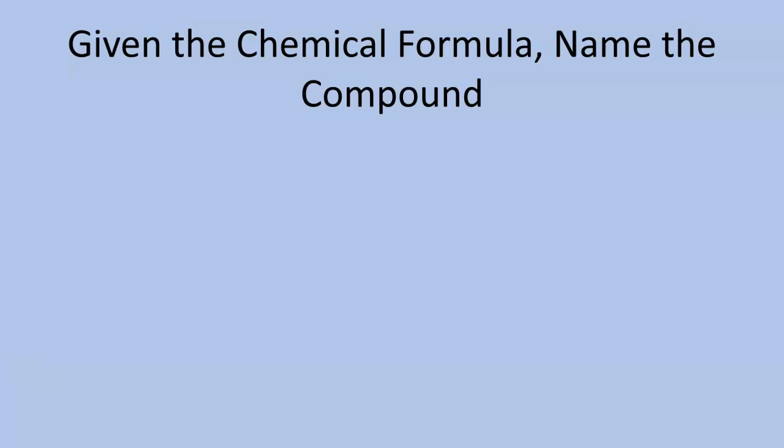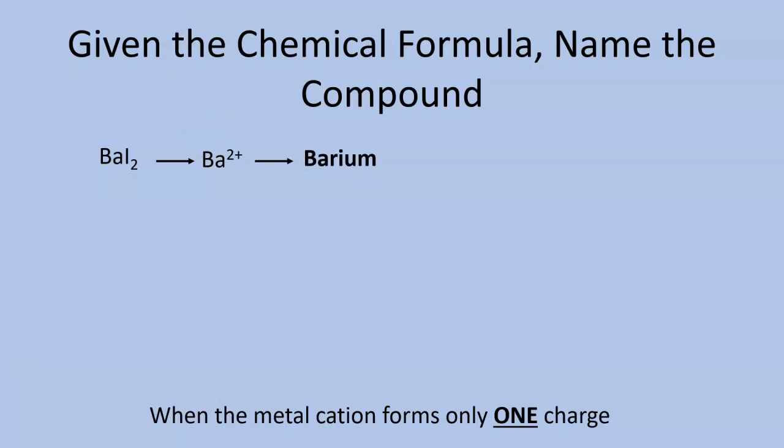So if we're given the chemical formula, we're going to name the compound. When a metal cation—remember, cation is positive, it loses electrons, the T in cation reminds me that it is positive—when the metal cation forms only one charge. So here, what do we have? We have Ba. We're going to start really simple with the Ba. If you look on your periodic table, your Ba is a positive two charge. It only forms a positive two charge. It is barium, and that's what it reads on your periodic table.